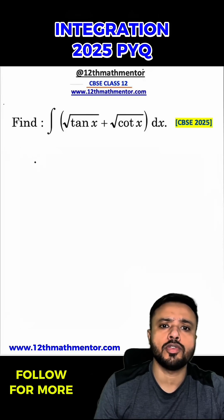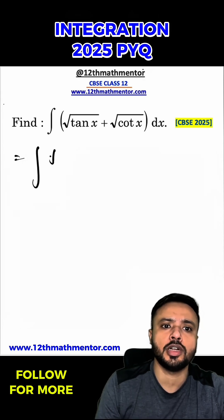The easiest way to solve the integral of √(tan x) + √(cot x) dx, which was asked in CBSE 2025 Class 12 Math board examination, is to first convert everything in terms of sine and cos.